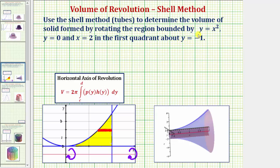Let's first graph the bounded region as well as the axis of rotation. Y equals x squared is this parabola here, y equals zero is the x-axis, and x equals two is this vertical line. So this yellow region is the bounded region, and y equals negative one is this red horizontal line. If we rotate this bounded region about y equals negative one, we would get this solid here, which we want to find the volume of.